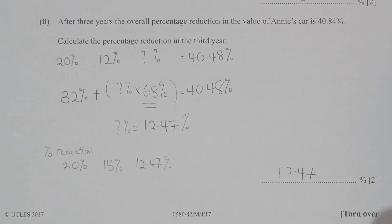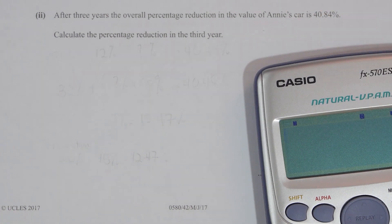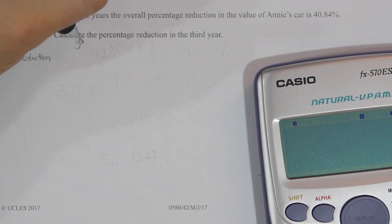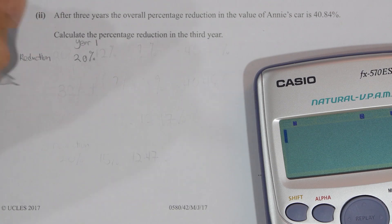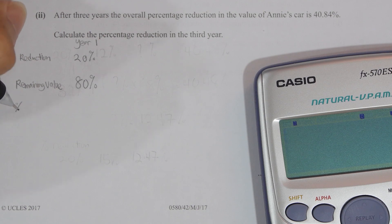For the next question, the reason my answer was wrong is that I treated 40.84 as 40.48. I found that explaining the question in table format helps a lot of students, so this will be the correction and walk-through. For the first year, the reduction is 20%, hence the remaining value will be 80%, and the yearly percentage reduction compared to the original value is also 20%.